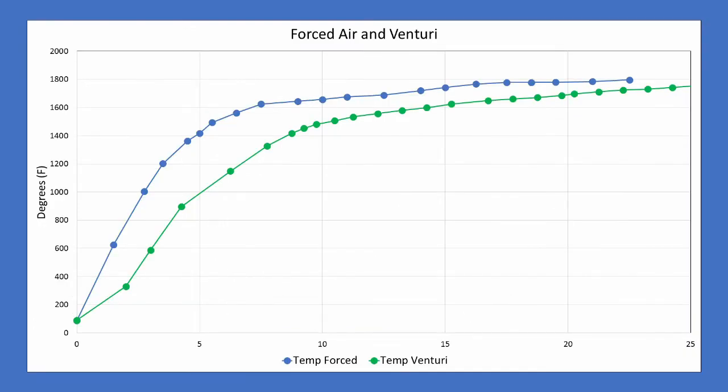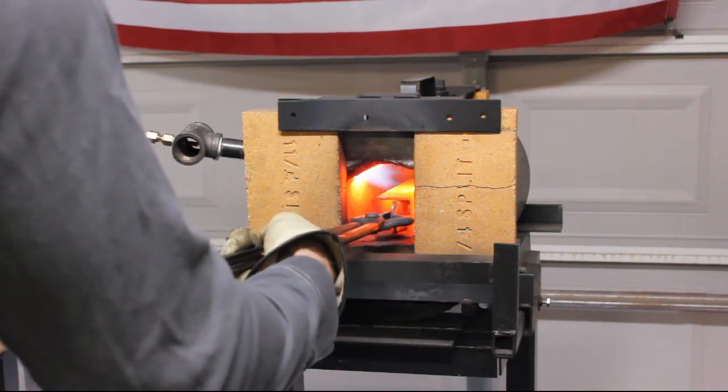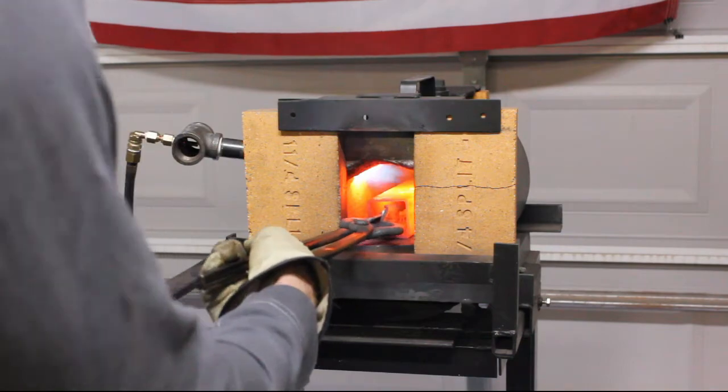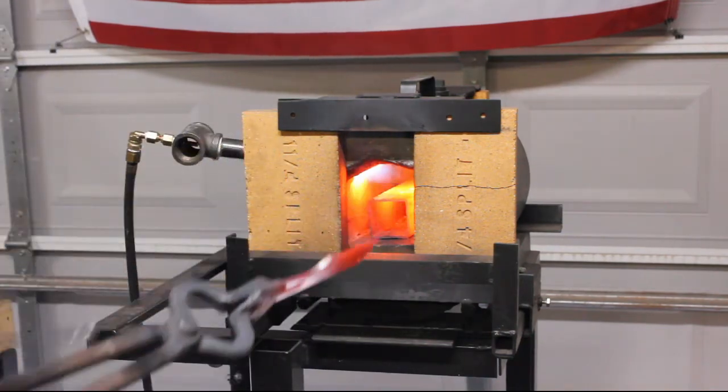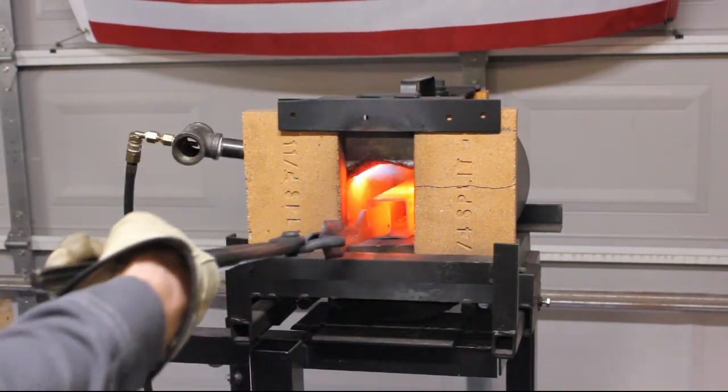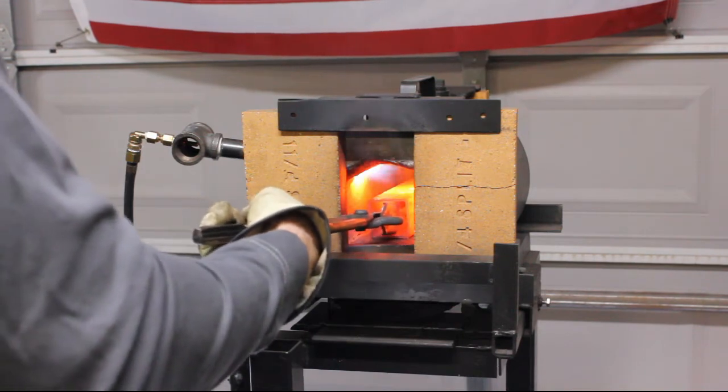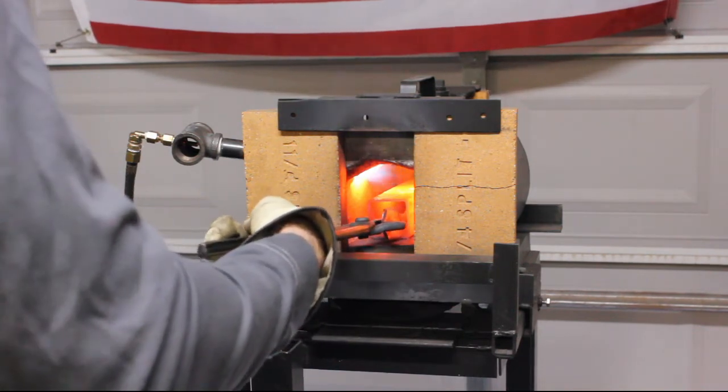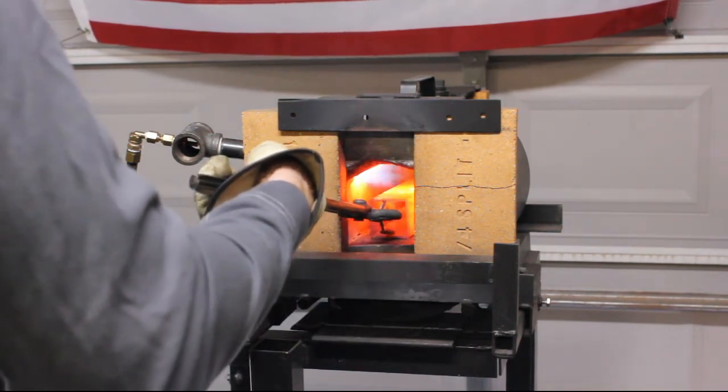So I could still use this forge obviously for heat treating. I will just need to be cognizant not to leave the blade in the forge to heat up to the forge temperature, otherwise it would be too hot. Utilizing a magnet can get me pretty close to 1500 degrees Fahrenheit. I'm going to try in the future to get my forced air burner down a little bit, but as of now I will have to use the magnet technique.